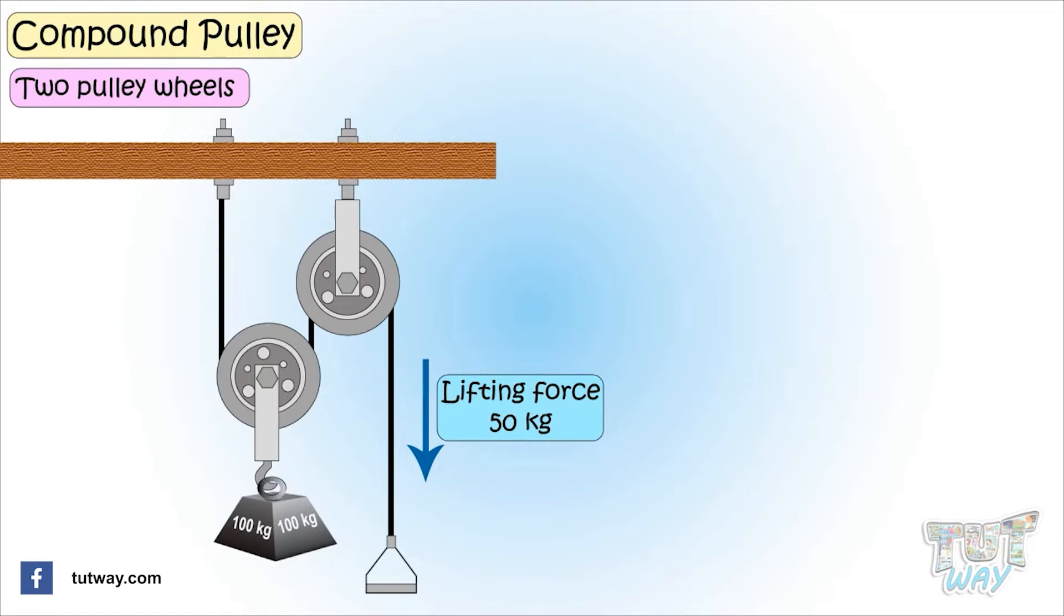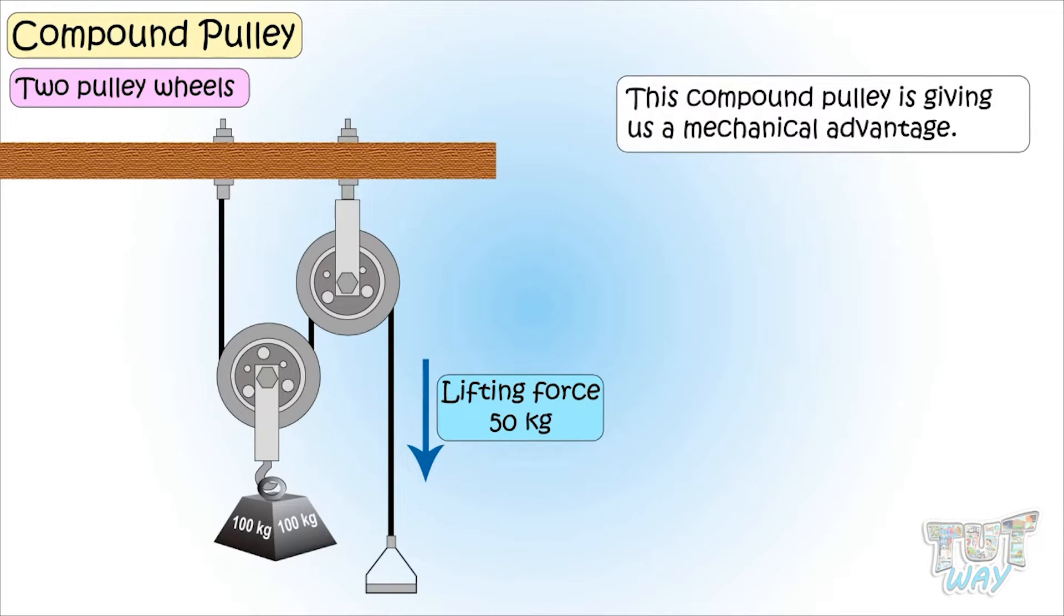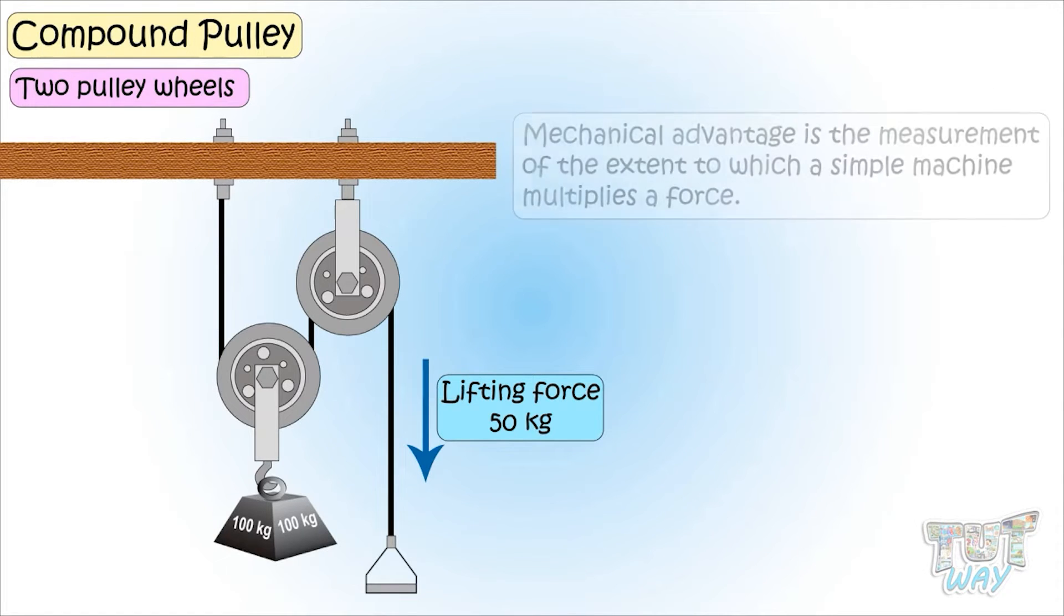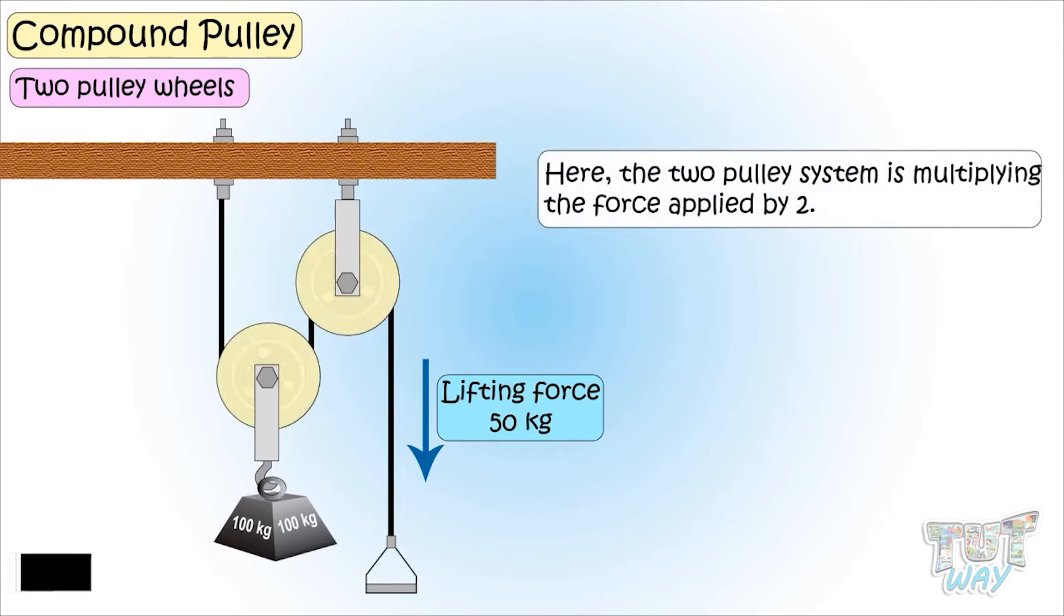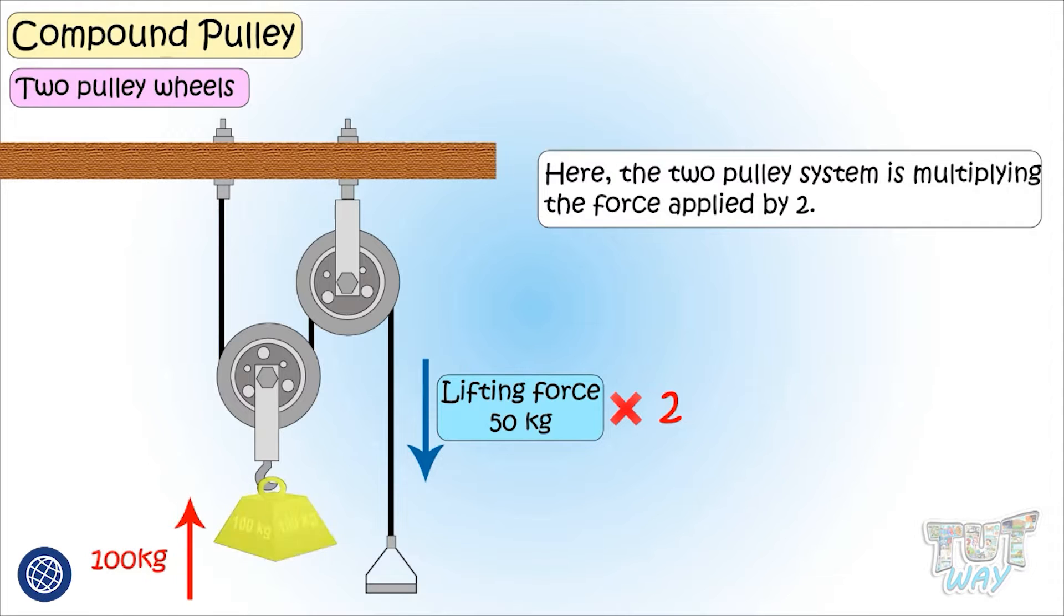That is, this compound pulley is giving you a mechanical advantage. Mechanical advantage is the measurement of the extent to which a simple machine multiplies a force. Here the two pulley system is multiplying the force applied by two. That is, you are applying a force of 50 kg and it is giving you a force of 100 kg.